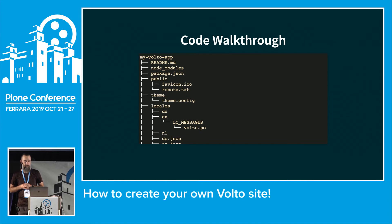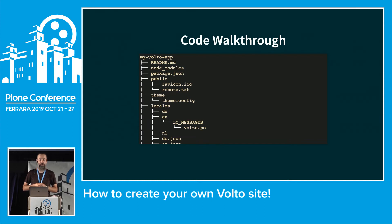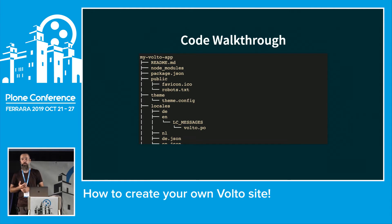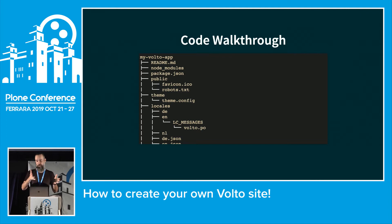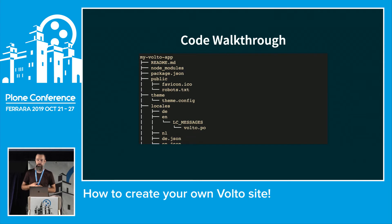There's a components folder — when you start out it's empty because you don't have any custom components, but you can put in any component: a view, or part of the UI like the logo or navigation. Anything in Plone that would be a view, viewlet, portlet, or template will be a component in React.